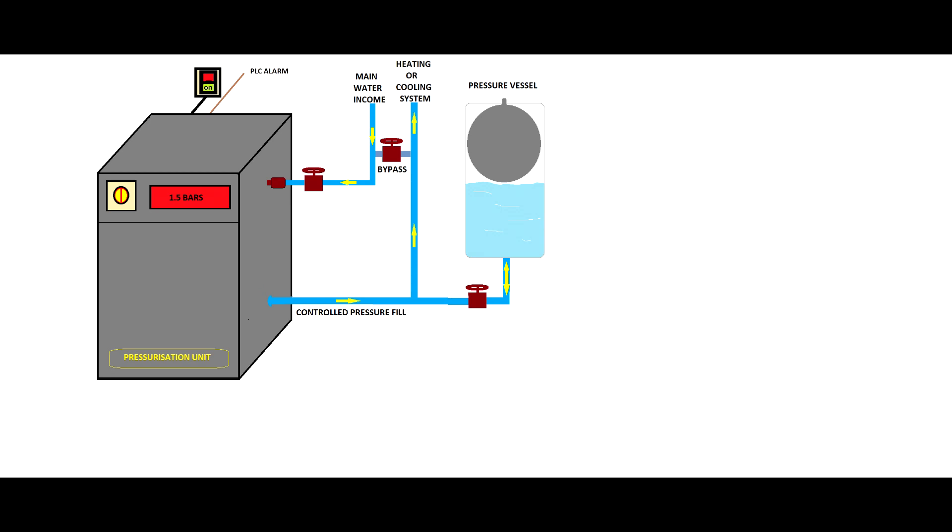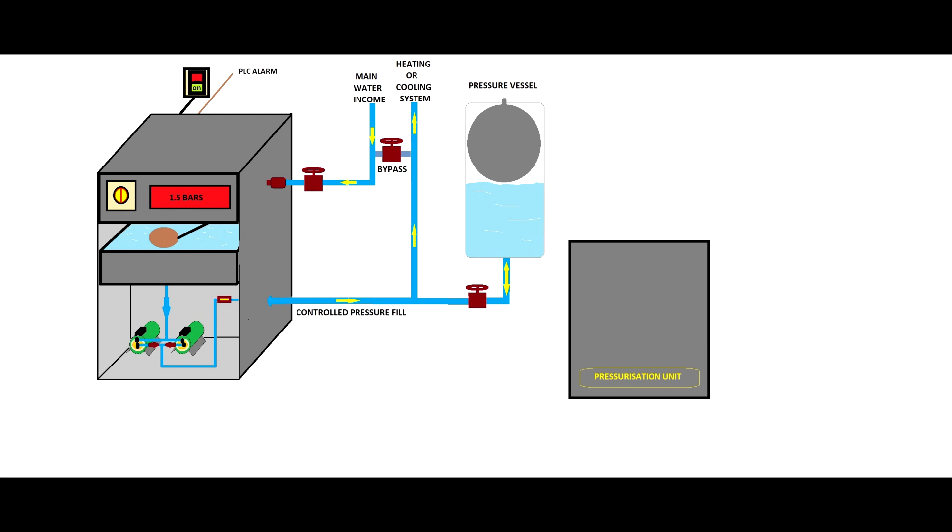But then if you remove the front lid you'll gain access inside. You'll see the pumps, the pressure sensor, the water tank and the floating valve. There are many types of pressurization units but even if they're differently configured, they do the same thing.